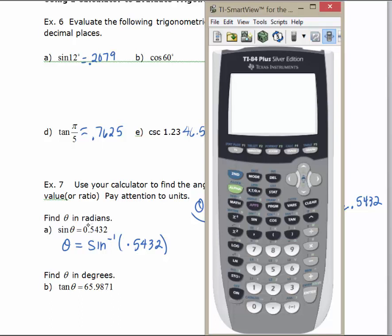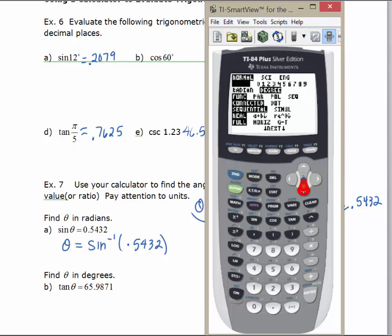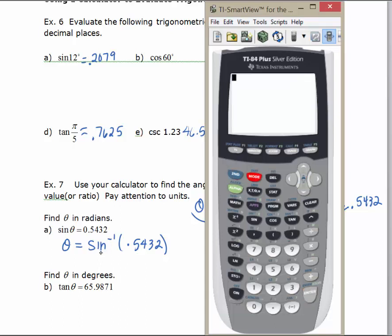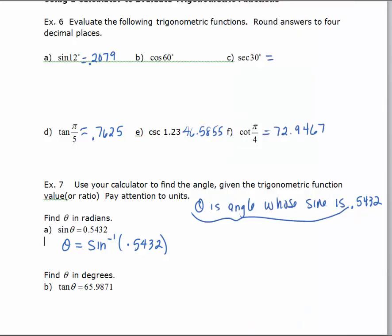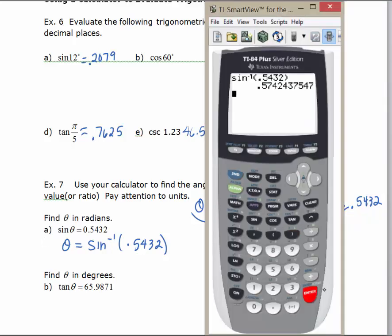Since we're looking for an answer in radians, we want the calculator in radian mode — it's still in degrees, so we'll change that. To find the angle whose sine is 0.5432, hit 2nd-sine and enter 0.5432. Rounding to the nearest hundredth, our angle in radians is approximately 0.57.